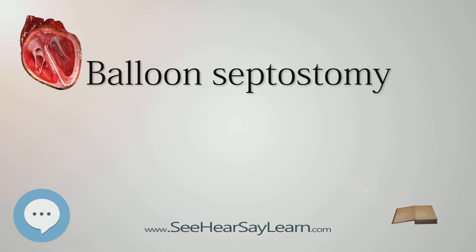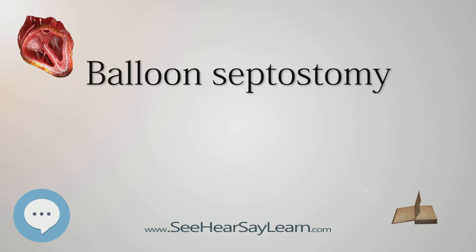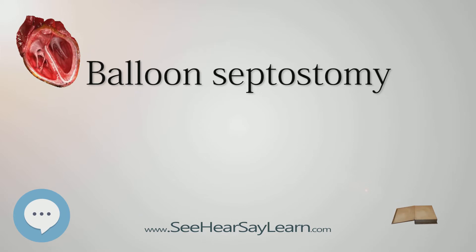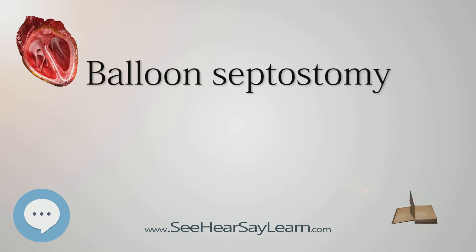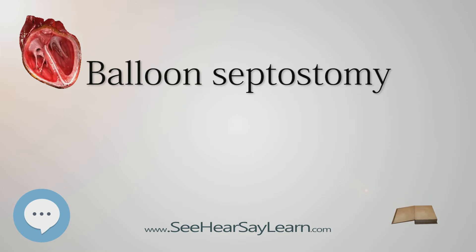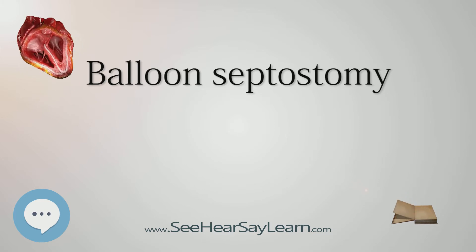After the catheter is inserted, the deflated balloon catheter is passed from the right atrium through the foramen ovale (PFO) or ASD into the left atrium. It is then inflated and pulled back through to the right atrium, thereby enlarging the opening and allowing greater amounts of blood to pass through it.